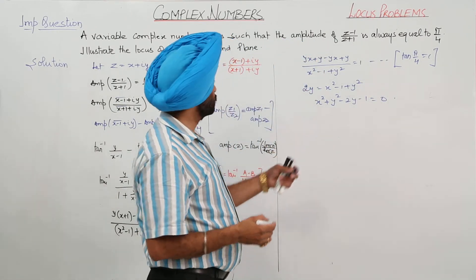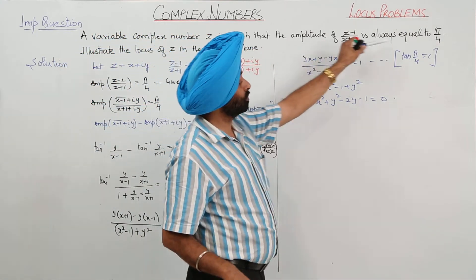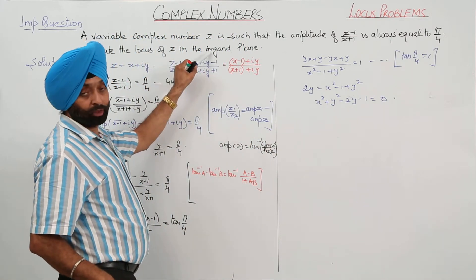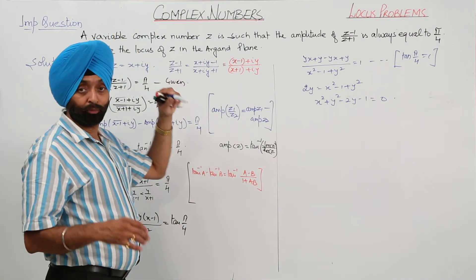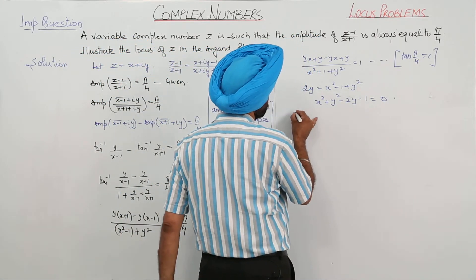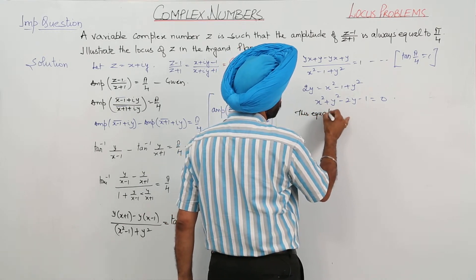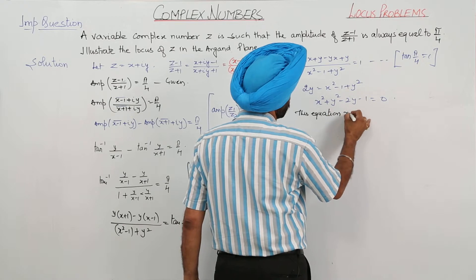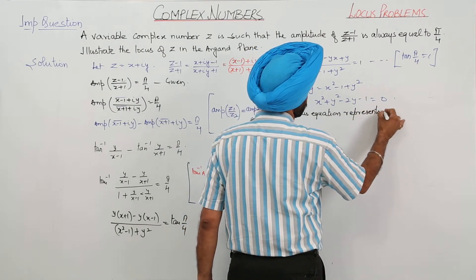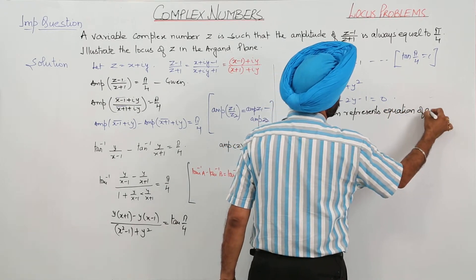The variable complex number z has amplitude of (z−1)/(z+1) always equal to π/4, and we need the locus of z in the Argand plane — the type of figure it represents. This equation x² + y² − 2y − 1 = 0 represents a circle.